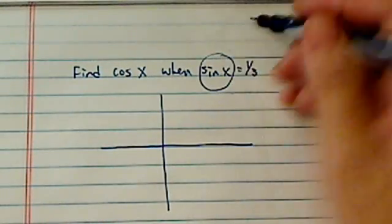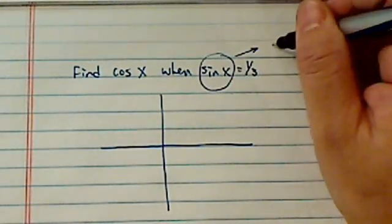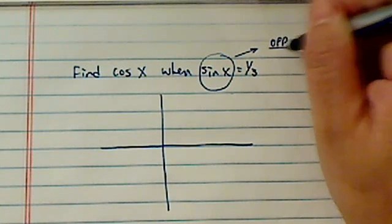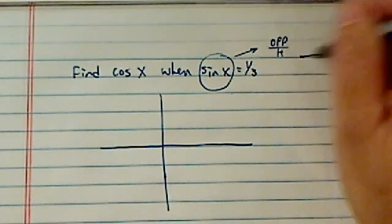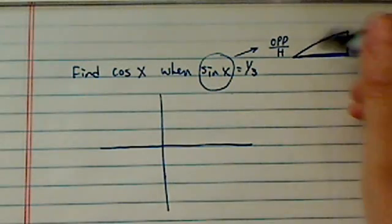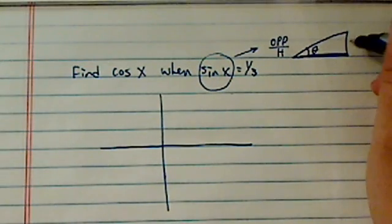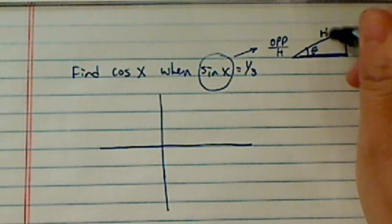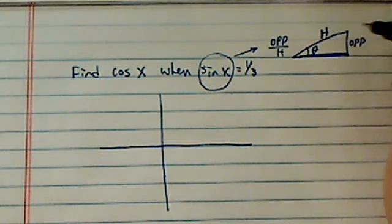Sine of x is given by definition. It's really opposite over hypotenuse. Now if you are drawing a right triangle here, if this is the angle, this is the opposite. This roof, this hypotenuse looks like a roof.